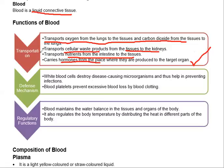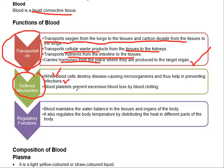Next is the defense mechanism. White blood cells are the defense against immunity; they help in preventing us from infections. Blood platelets prevent excessive blood loss by blood clotting.